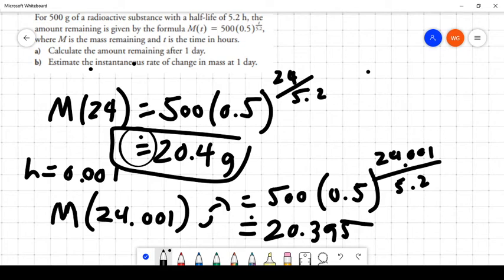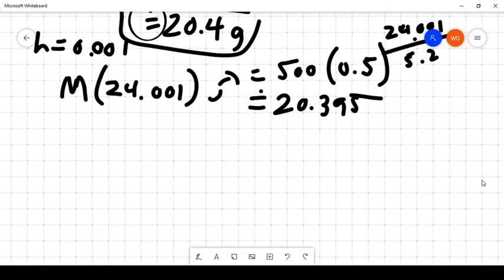But I'm also going to store the answer to this question as its full decimal as well. So I'm quickly going to do that question one more time. 24 divided by 5.2, and I'm going to raise 0.5 to the power of that. And then I'm going to times the result by 500, and what I get is 20.39862. And I'm going to store that in another storage compartment of my calculator. And now, this brings us to getting to the answer.